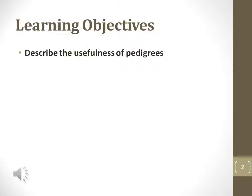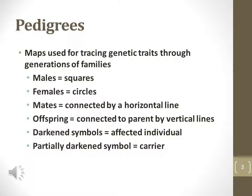Pedigrees are used to determine the inheritance pattern of a particular trait. Pedigrees are generational maps used to trace the inheritance patterns of different traits. Squares represent males, circles represent females, horizontal lines denote mates, and vertical lines represent offspring. Darkened symbols represent affected individuals while partially shaded symbols represent carriers.